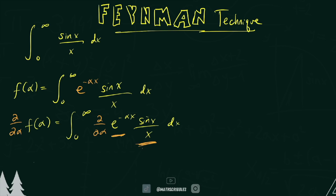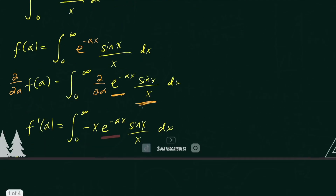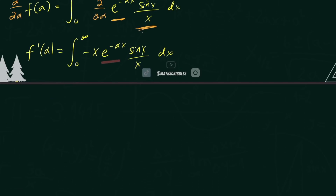On the left side we have F'(α). We keep the bounds zero to infinity and now we have negative x · e^(−αx) · sin(x)/x dx. The reason that works is: it's e^(−αx) times the derivative of the inside — x is the constant, so we're taking the derivative with respect to alpha, giving us the negative x out front. This is precisely why we use the Feynman technique, because the x on the bottom and the x on top cancel out. That makes things much easier, because now we have an integral from zero to infinity of negative e^(−αx) sin(x) dx — the x factor has been eliminated.